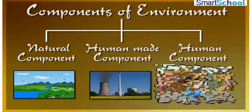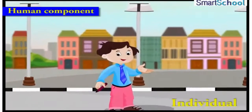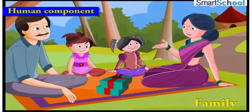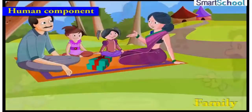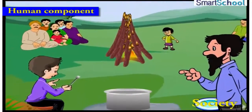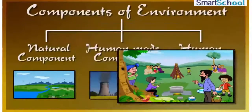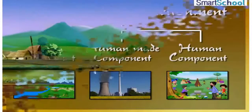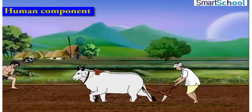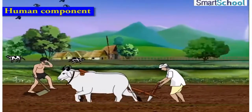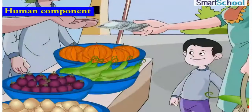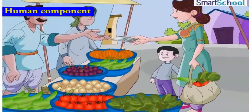And finally, human component consists of individual, family, society, etc. It is also called as human environment and it reveals the activities, creations, and interactions among human beings.